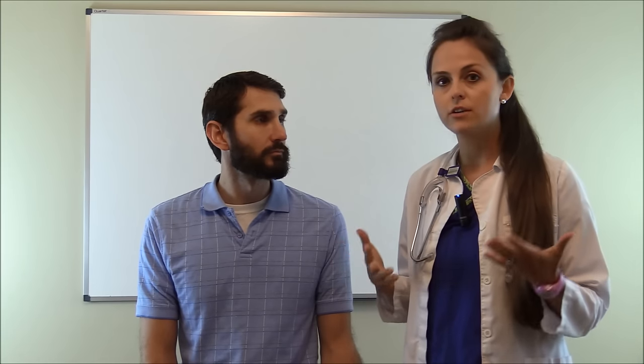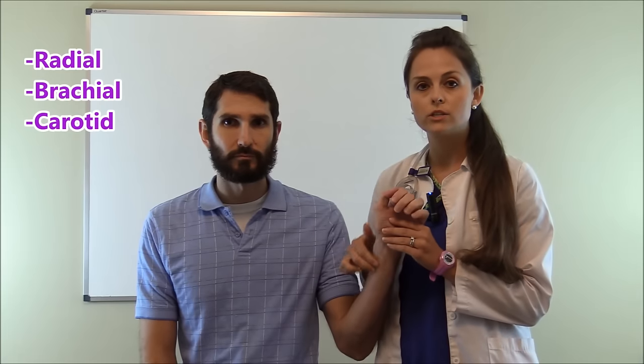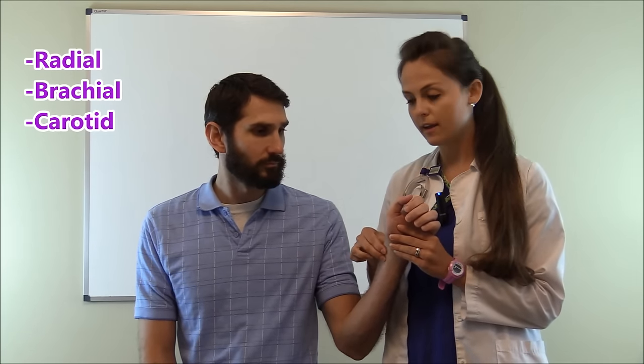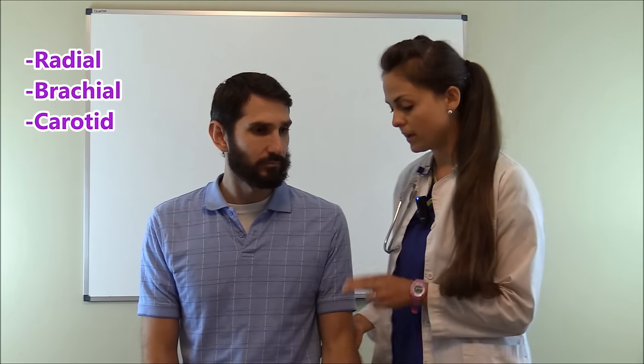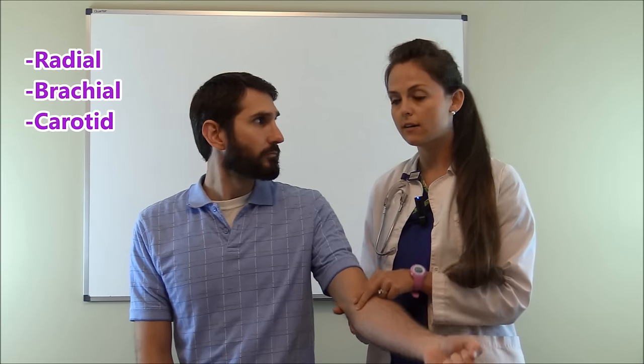So we're going to first count the heart rate and to do that you can use several different sites. Typically people use the radial which is right here right below where the radius bone is in the groove right there or you can use the brachial artery which is in the bend of the arm where the antecubital fossa area is or you can use the carotid but here we're going to use the radial.